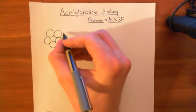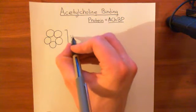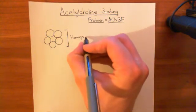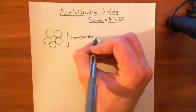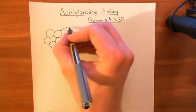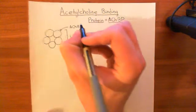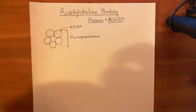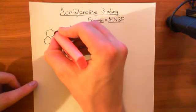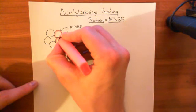Now this structure that we've formed here, this pentamer, is a homopentamer. So every single protein in this pentamer is identical to the others. You take the acetylcholine binding protein, which is just one of these, you make five copies of it, and you put them together in this homopentameric ring. This is now the acetylcholine binding protein homopentamer.